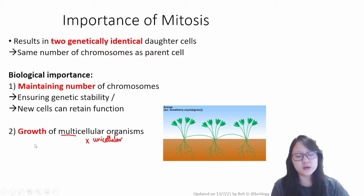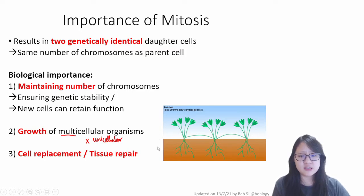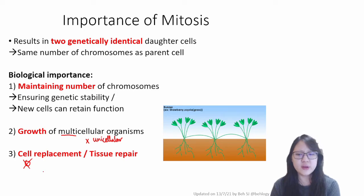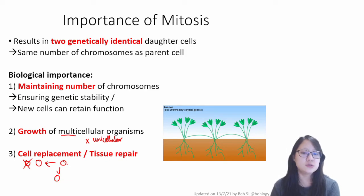Be careful when looking at questions and writing your answers — growth applies to multicellular organisms. Mitosis is also very important for cell replacement and tissue repair. When a cell dies or is destroyed because you cut yourself or got hurt, another cell can divide by mitosis to replace that cell. That is cell replacement. Tissue repair is essentially the same thing, because the cell that died would be in a tissue, so to repair the tissue you have to undergo cell replacement — these two are interconnected, not separate points.